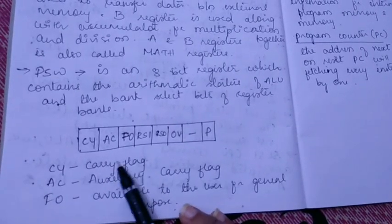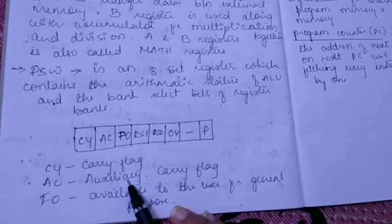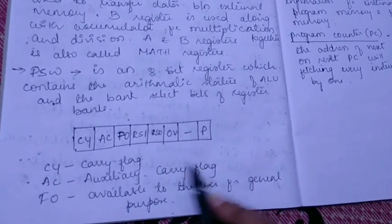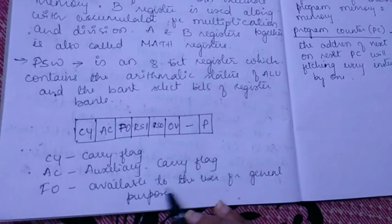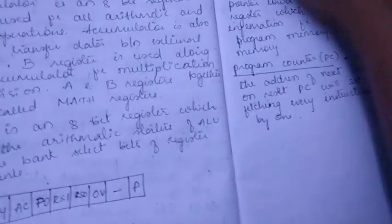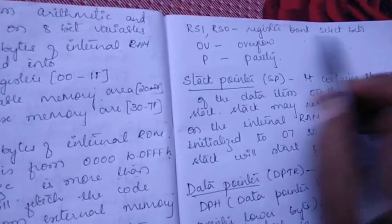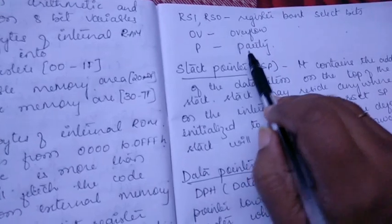It indicates a carry, auxiliary carry, which is a mid carry we say auxiliary carry flag. This is F0 available to the user for general purpose. Next RS1 and RS0, those bits are the register bank select bits. Next is overflow and parity. These you will learn in detail when it comes to a pin diagram.